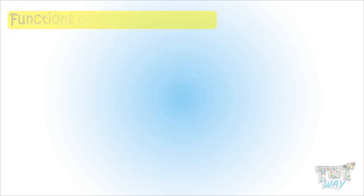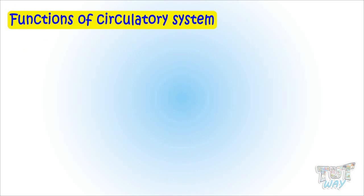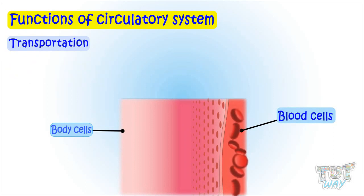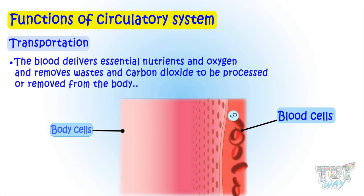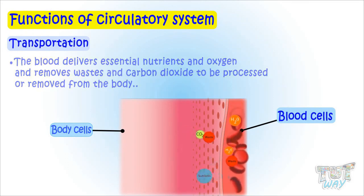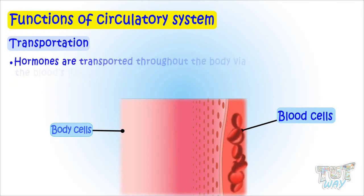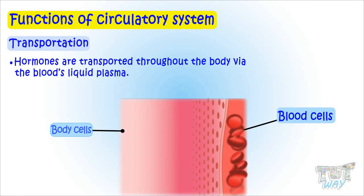Let's learn the main functions of the circulatory system. The first function is transportation. The cardiovascular system transports blood to all the cells of the body, delivering nutrients and removing waste and carbon dioxide from each and every cell. Hormones too are transported throughout the body via the blood's liquid portion, that is, plasma.